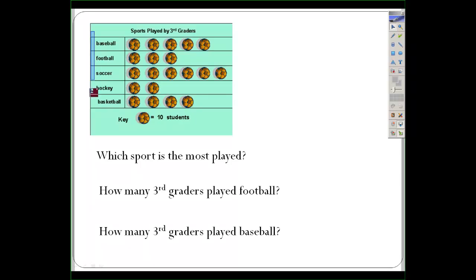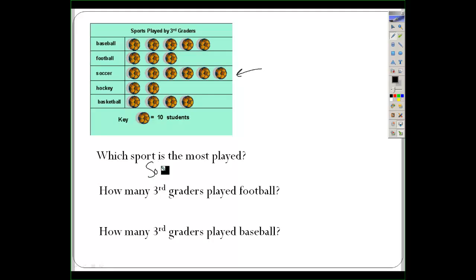Let's evaluate this pictograph. I want to know which sport is the most played. Here are my sports on the left-hand column. I want to know which one has the most students. Baseball has five pictures, football three, soccer six, and so on. Soccer obviously has the most pictures next to it, so soccer is the most played sport.